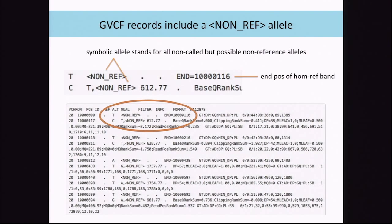In a GVCF, for homozygous-reference calls it includes a new alternate allele called non-ref, which represents all potentially non-called alternate alleles. A block record shows the start and ending position, the reference and non-ref alleles, all site-level annotations, the genotype, and the PLs. The PL (phred-scaled likelihoods) gives you the confidence in all of the genotypes.